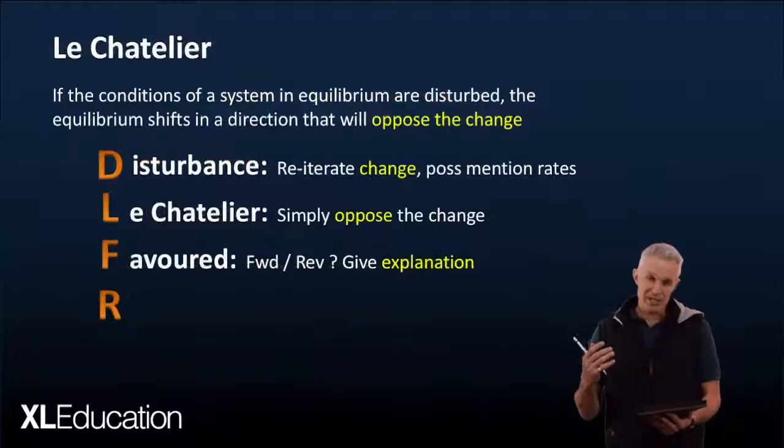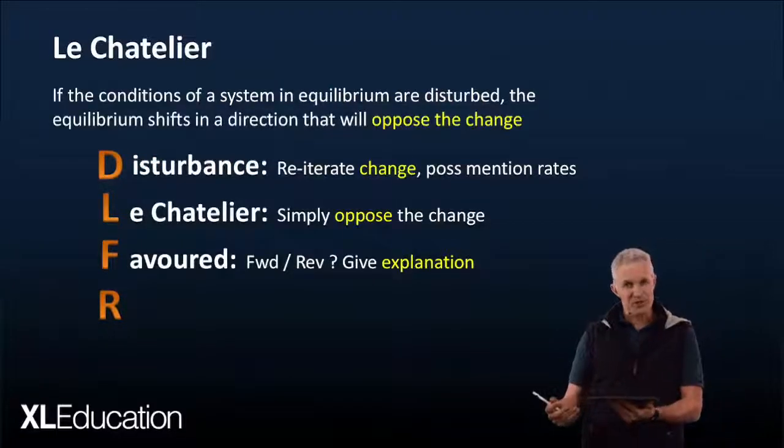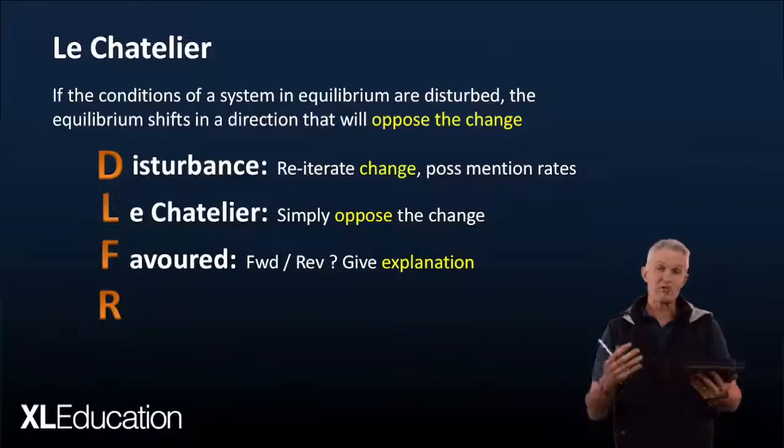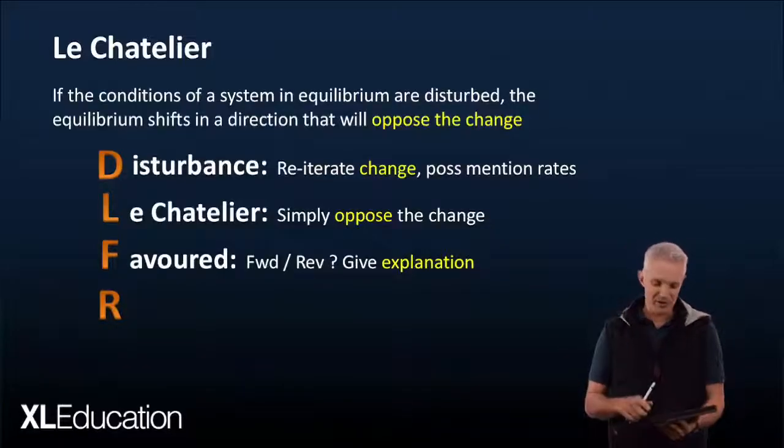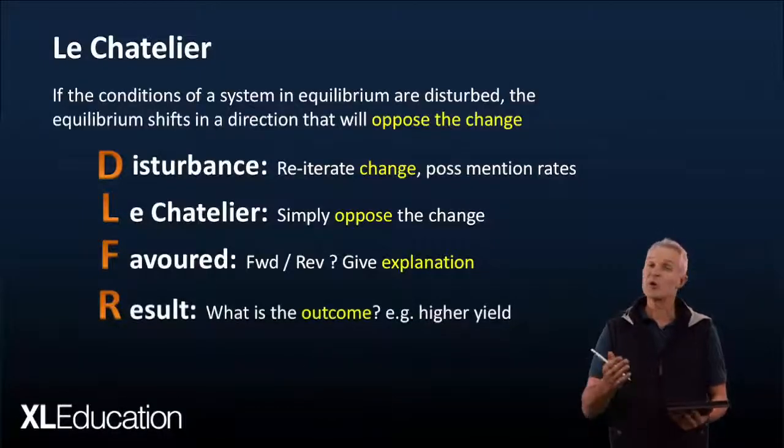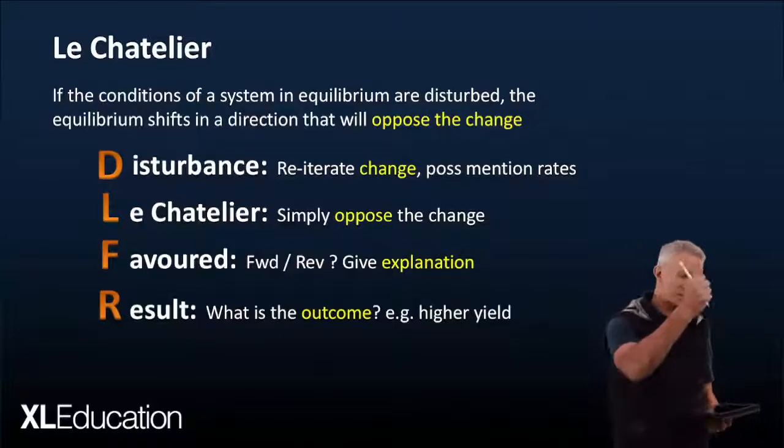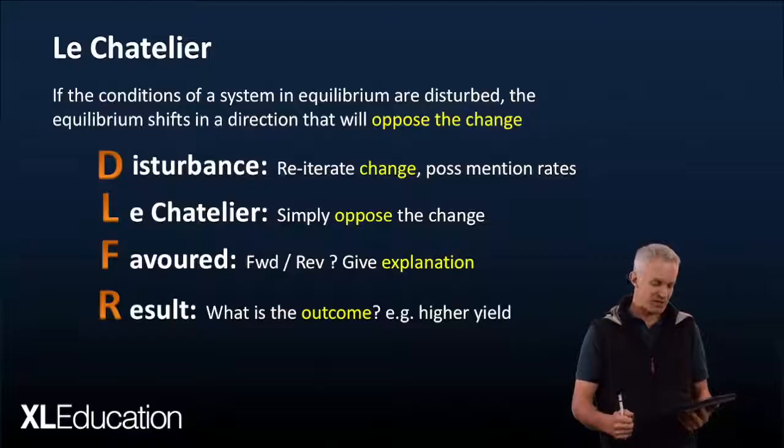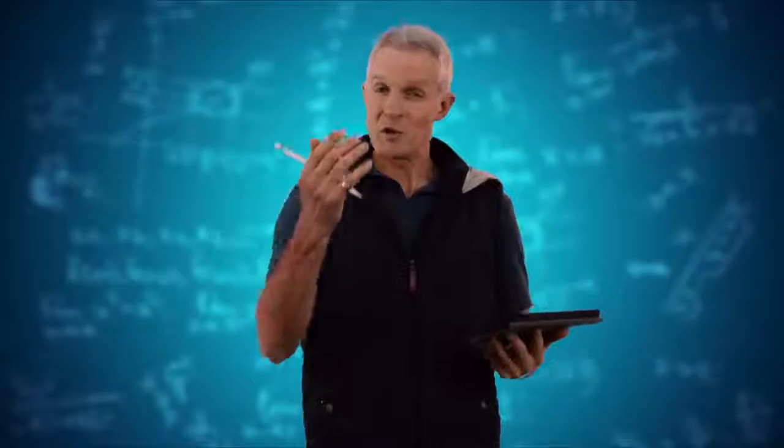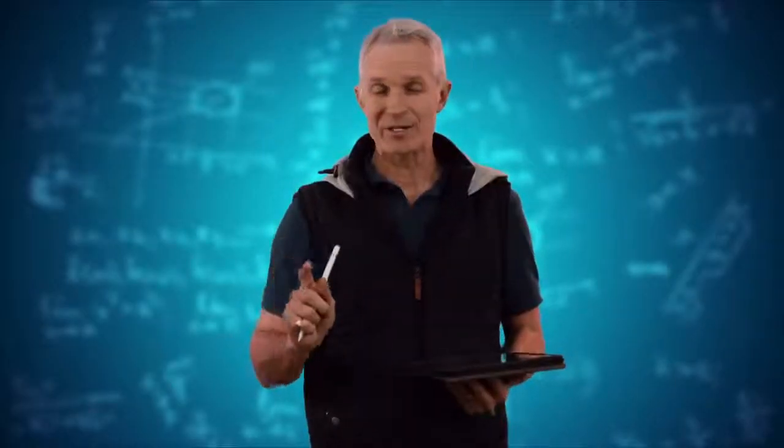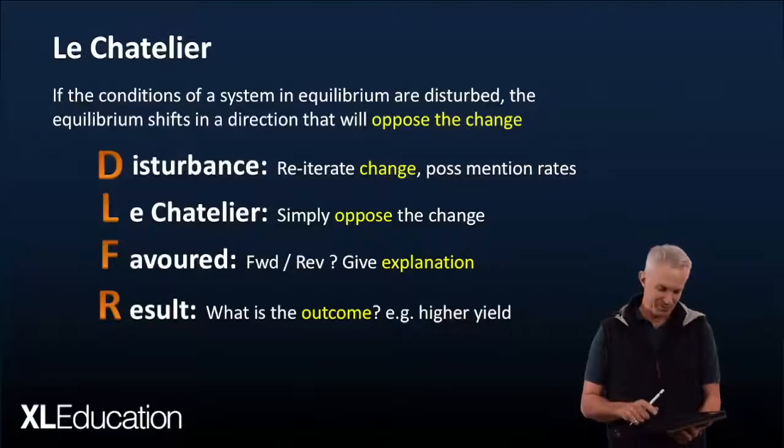So we've worked out the disturbance, we've gone to the opposite of that disturbance according to Le Chatelier's principle, we've worked out which reaction is going to be favoured, the only thing we have to do now is mention the result or the outcome. And the question is actually often geared towards this. It'll say when Thabo put the mixture into the ice, how did that affect things? Well with our ammonia example it would be cooling it down by putting it in ice, so therefore it wants to warm itself up. It warms itself up by doing an exothermic reaction, which is the forward reaction, and therefore we would increase the yield of ammonia produced. So that's an example.